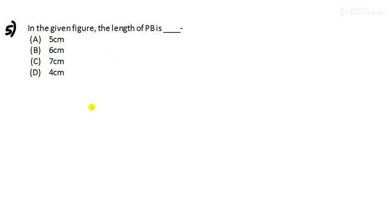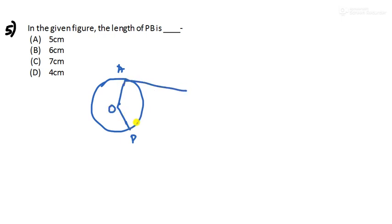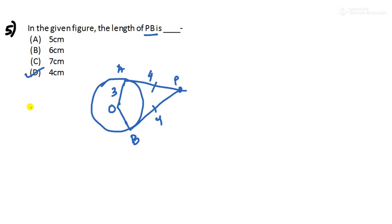Question 5: in the given figure, this is A, O, B, and P. They have given PA as 4 centimeters and OA as 3 centimeters. They ask for the length of PB. Since PA and PB are both tangents drawn from the same external point P, they are equal. So if PA is 4 centimeters, then PB is also 4 centimeters. Option D is correct.